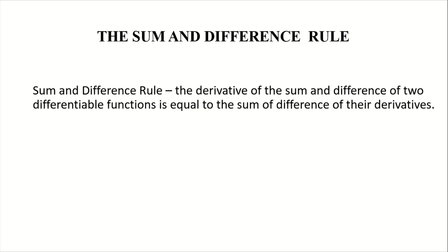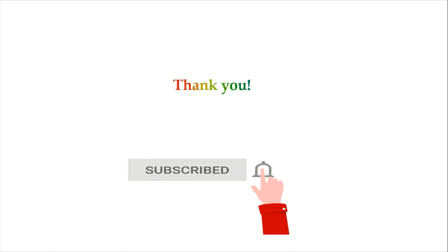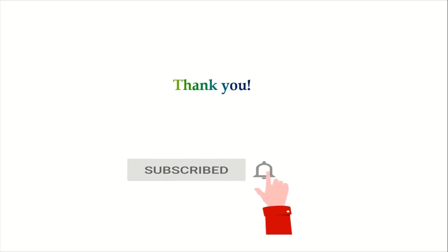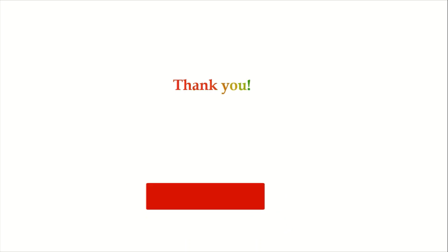To sum it up: the sum and difference rule states that the derivative of the sum or difference of two differentiable functions is equal to the sum or difference of their derivatives. All you have to do is get the derivative of each term in the function, then perform the sum or difference. That's all for today class — don't forget to thumbs up, share, click the subscribe button, and hit the notification bell. Thank you!